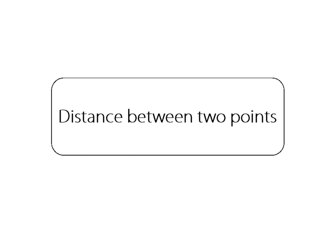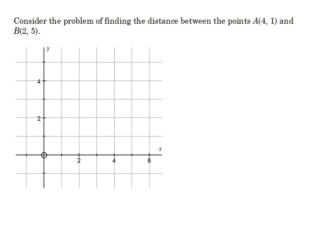Distance between two points. We wish to consider the problem of finding the distance between the points A and B, where A has coordinates 4, 1 and B has coordinates 2, 5. So let's mark those points: A is at 4, 1 and B is at 2, 5. We wish to find the direct distance between these two points.